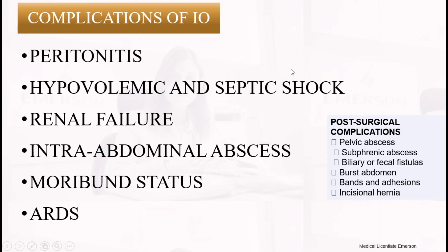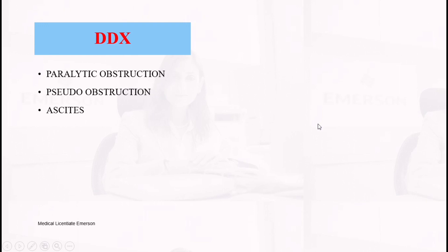Complications of intestinal obstruction include peritonitis, hypovolemic and septic shock, renal failure, intra-abdominal abscess, morbid states, and acute respiratory distress syndrome. Post-surgical complications include pelvic abscess, subphrenic abscess, bowel or fecal fistula, burst abdomen, bands, ischemia, and incisional hernia. Differential diagnoses include paralytic obstruction, pseudo-obstruction, and ascites.